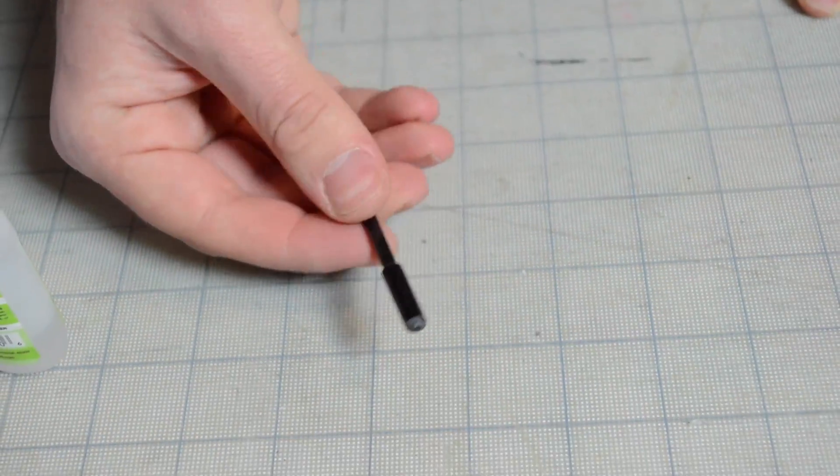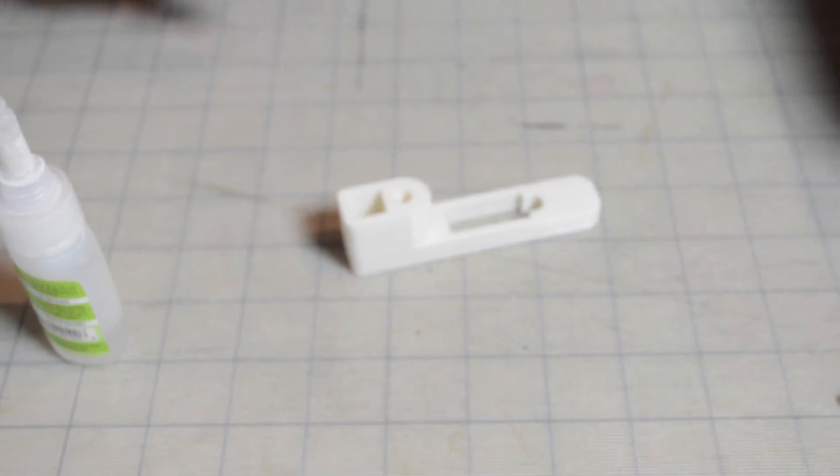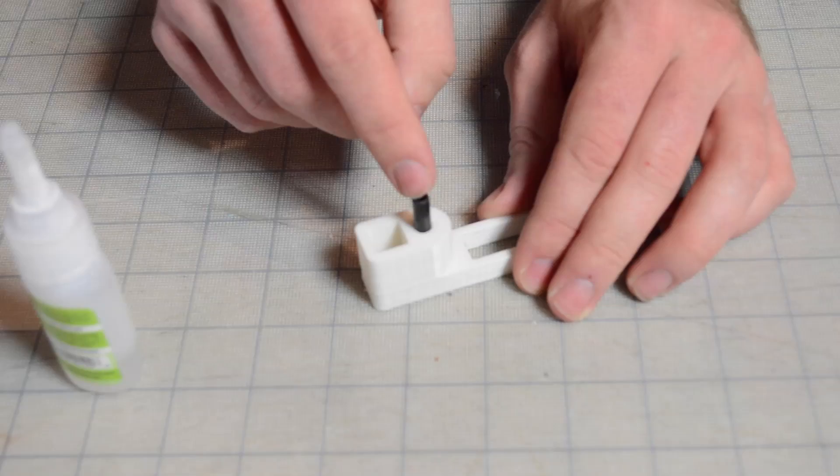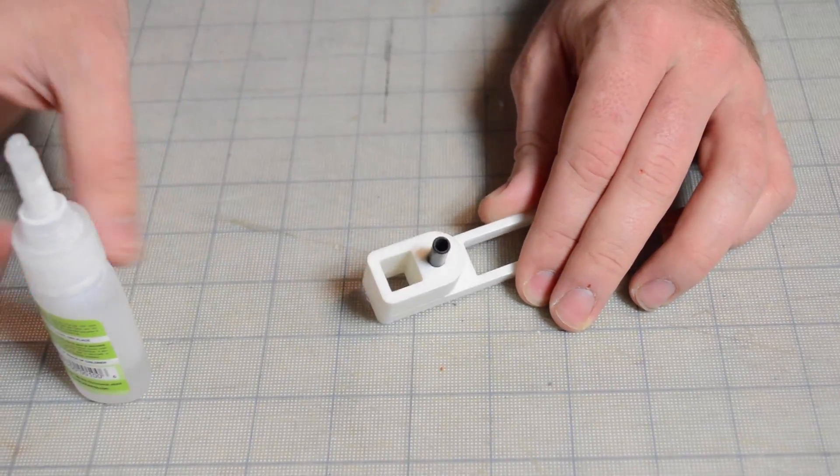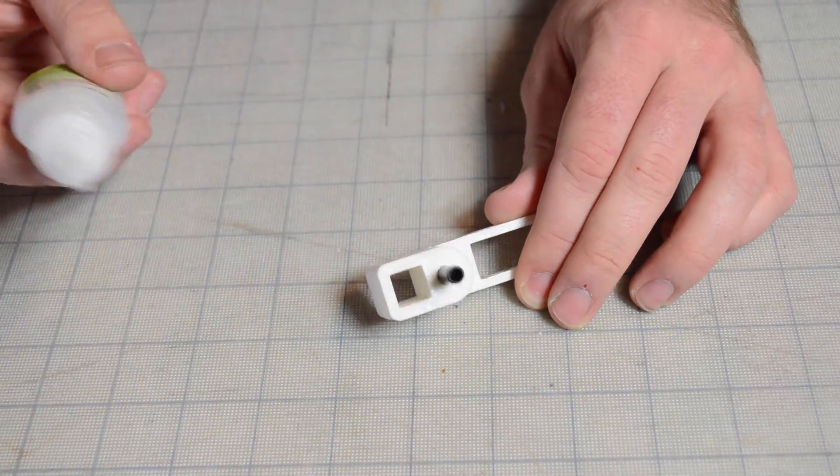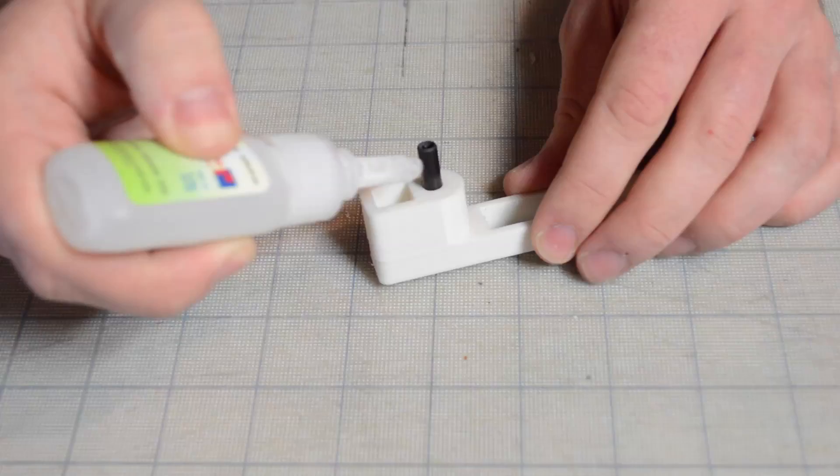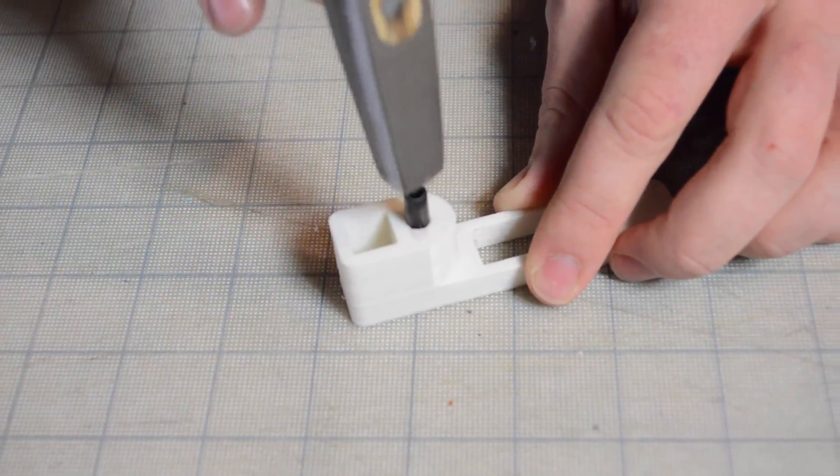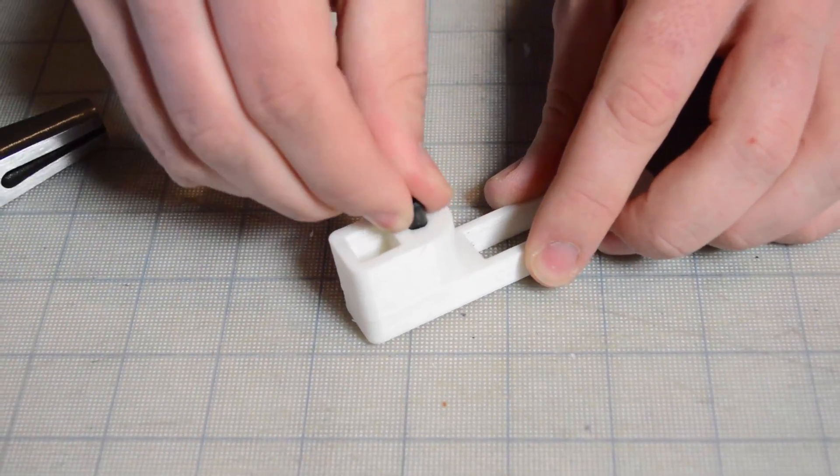And get it to the end right there. Now while it's drying we can put in the carbon rod into this main section, and the way that we're going to do that is by putting this piece, which cannot get any carbon or CA on the inside because it's going to be moving on the inside. And putting a tiny little dab on the edge,